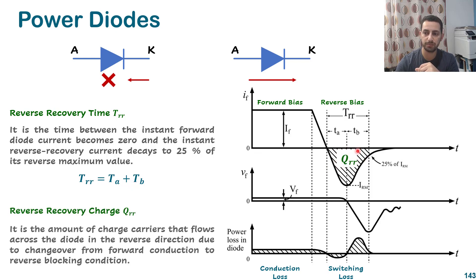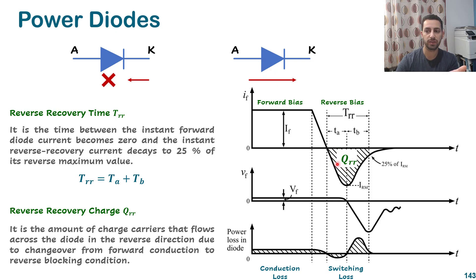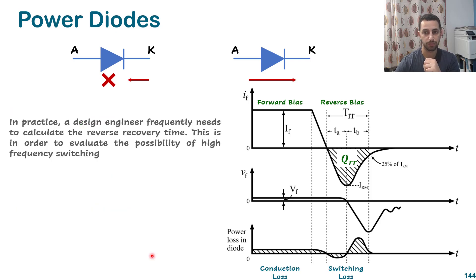The reverse recovery time is the time between the instant the forward diode current becomes zero and the instant the reverse recovery current decays to 25% of its maximum value, and it equals ta plus tb. The shaded area represents charges QRR — the charge carriers that flow across the diode in the reverse direction due to changeover from forward conduction to reverse blocking condition. In practice, the designer should take this into consideration for high frequency applications, calculating or obtaining TRR and QRR from the datasheet.